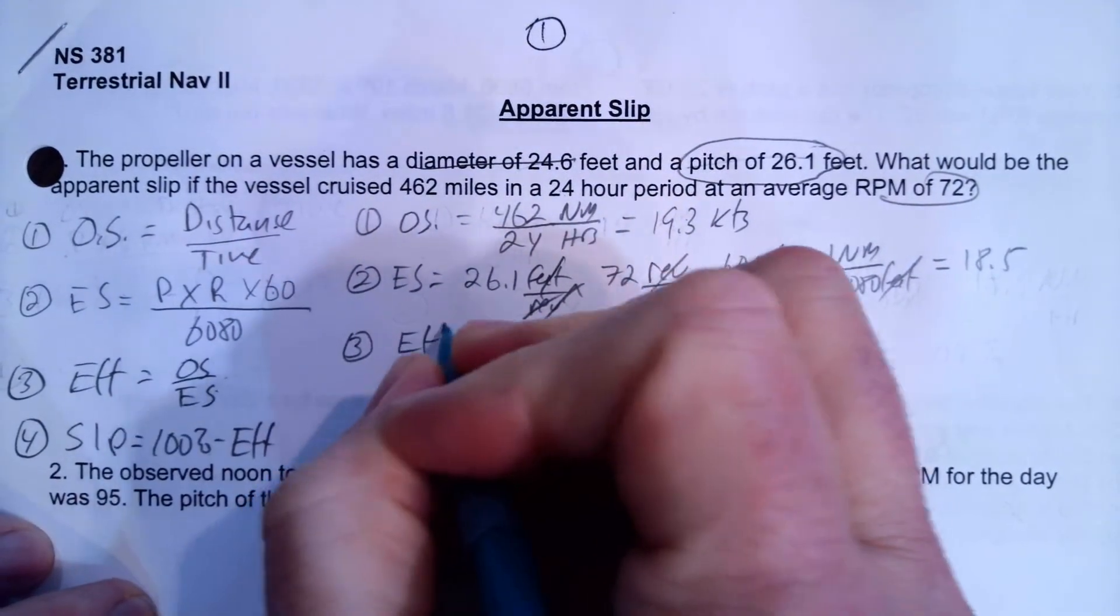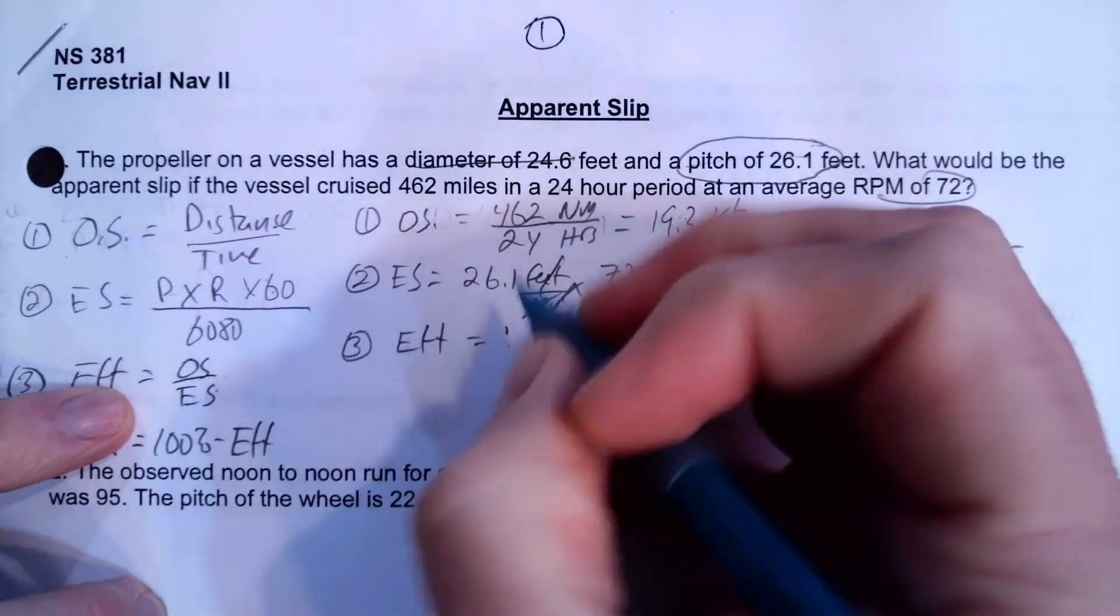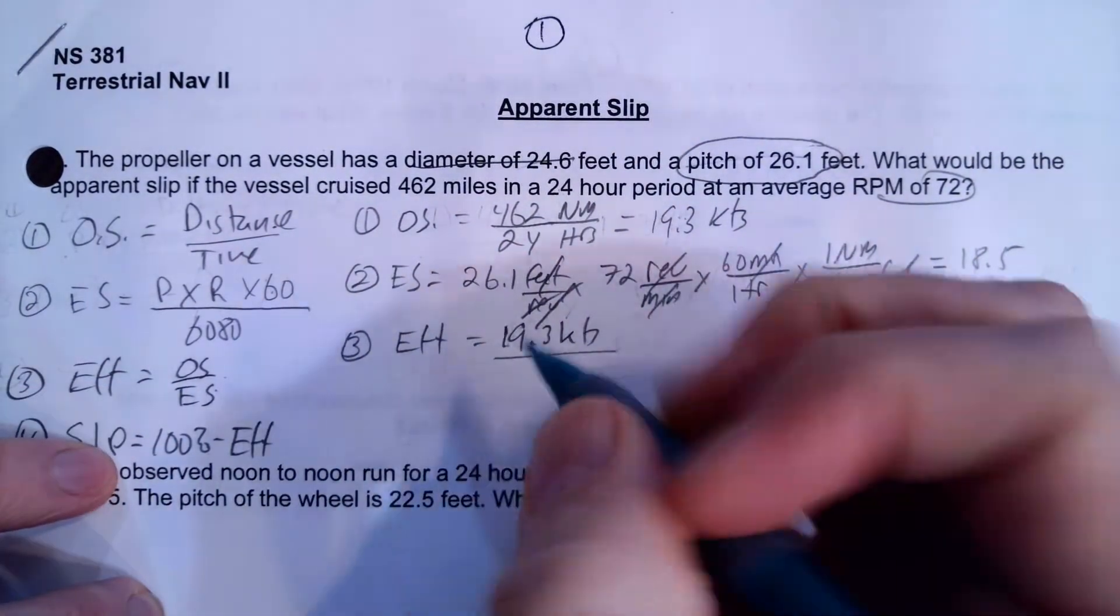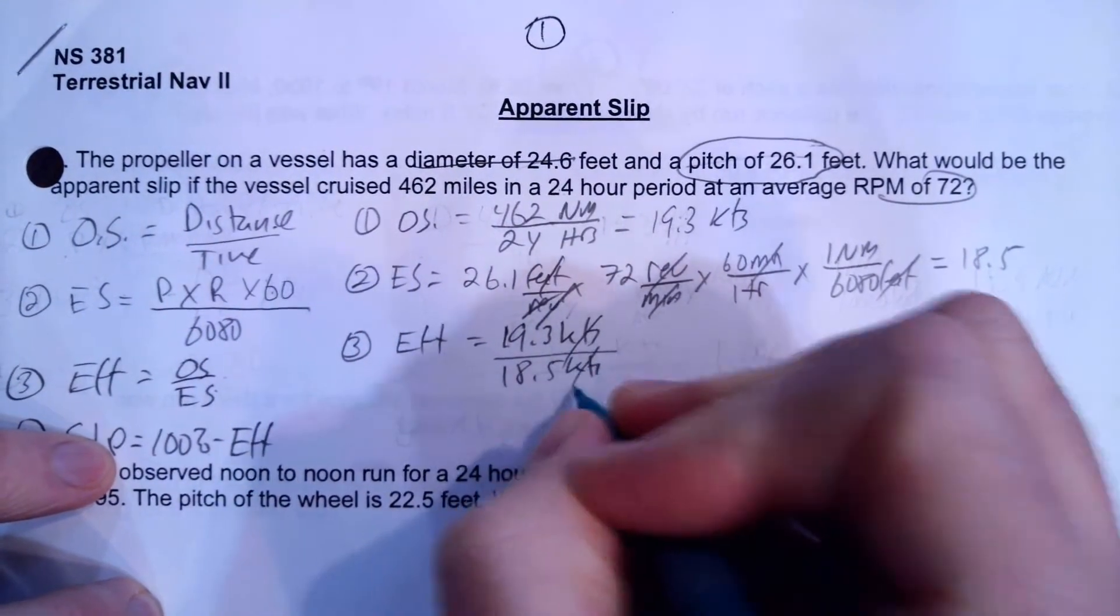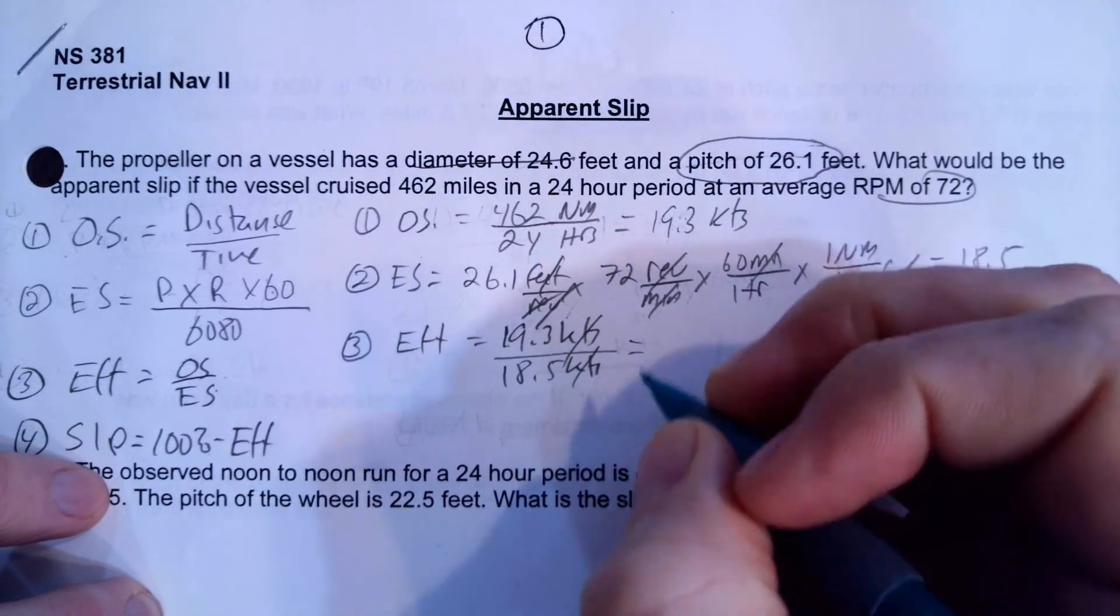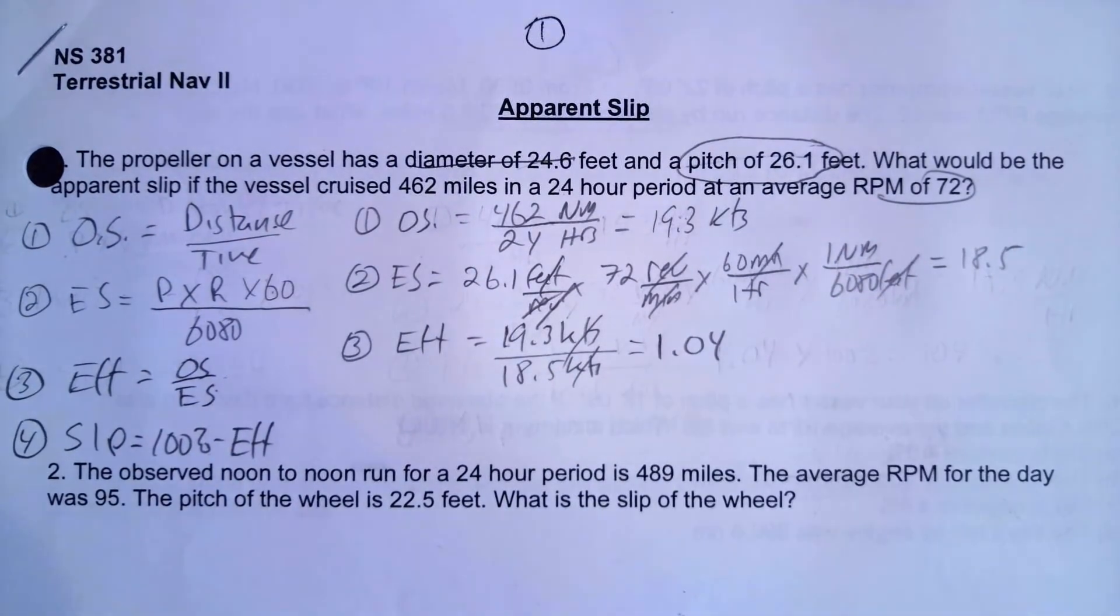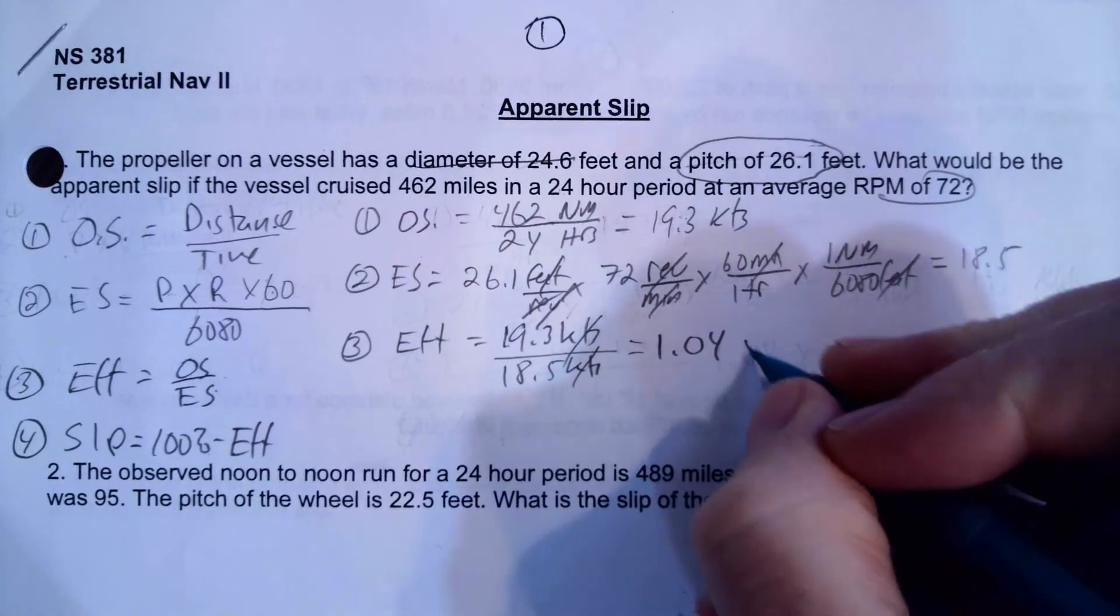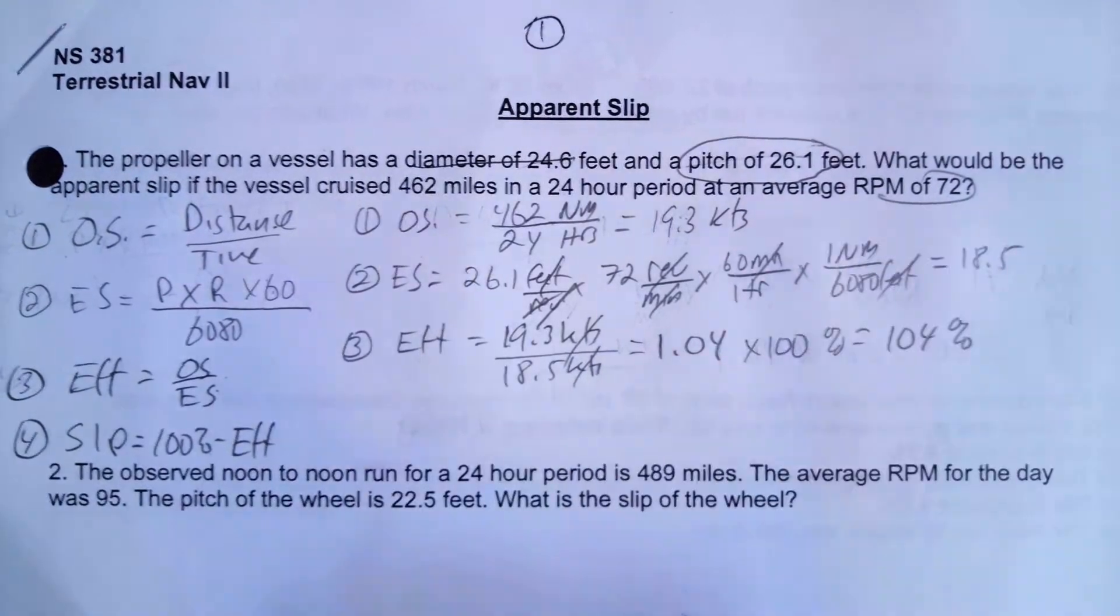Efficiency is now going to be the observed speed 19.3 knots divided by the actual engine speed, our theoretical engine speed, which is 18.5 knots. Knots cancel out. 19.3 divided by 18.5 gives me 1.04. So I have an efficiency. Typically we talk about efficiency in percent. So now I'm going to multiply this by a hundred percent and that's going to give me an efficiency of 104%.